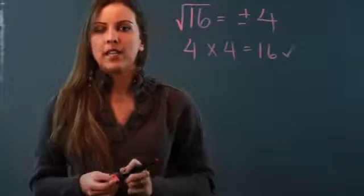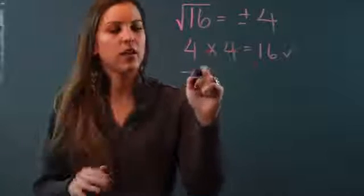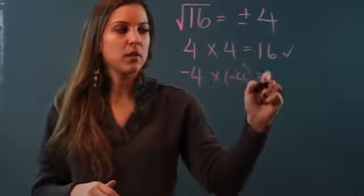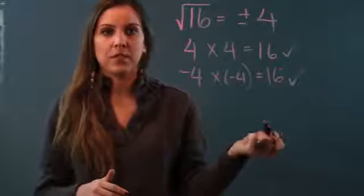But the same thing happens when I take a negative number, because negative 4 times negative 4 is also equal to 16. So that checks off as a square root as well.